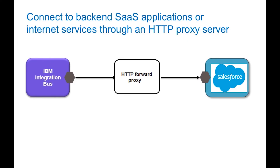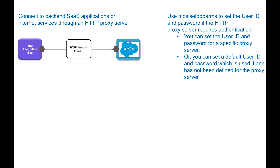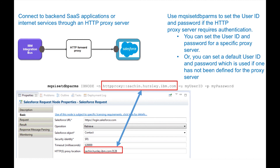In this video, I have shown how you can use the HTTP-based nodes and the Salesforce request node to use an HTTP proxy server. If the HTTP proxy server has authentication enabled, the user ID and password can be stored using MQSI set dbparms. A default user ID and password can be specified using MQSI set dbparms, but the message flow nodes must still have a value specified for the HTTP proxy server location. The HTTP proxy server name on the message flow node must match the identifier used in MQSI set dbparms.